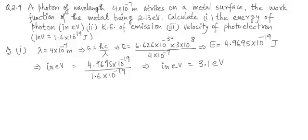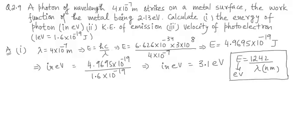This is one method. What I would suggest is that you remember this: E is equal to 1242 divided by lambda in nanometers. So 4 into 10 to the power minus 7 meter, it will be 400 nanometers. You can verify it. So energy in electron volts comes out to be 3.1 eV.